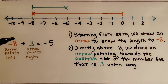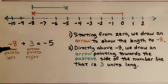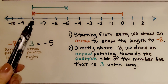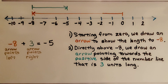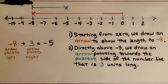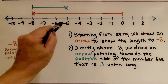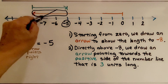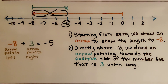Here we have negative 8 plus 3 — negative and positive. This arrow is going to point to the left. We start at 0 and draw an arrow to negative 8. Then directly above negative 8, we draw an arrow pointing towards the positive side of the number line that is 3 units long: 1, 2, 3. That brings us to negative 5. This arrow canceled out part of the negative 8 arrow. Negative 8 plus 3 is equal to negative 5.